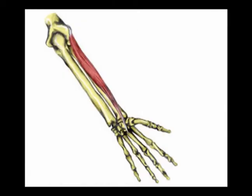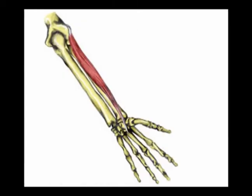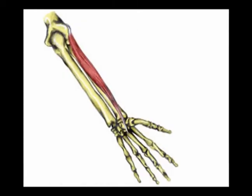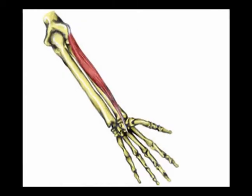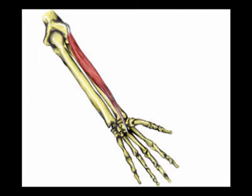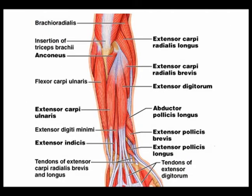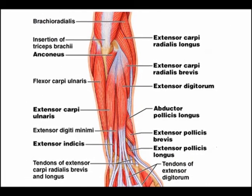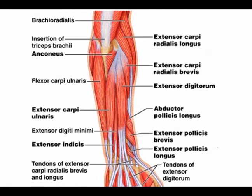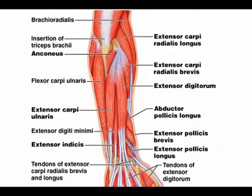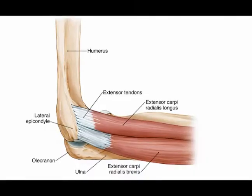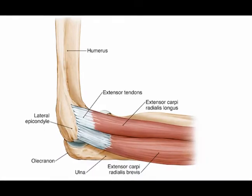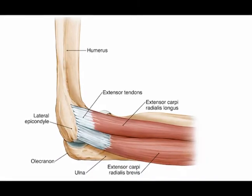Again, the extensor carpi radialis brevis is often abbreviated to the ECRB. It is classified as a posterior forearm muscle in the superficial group. The origin is the lateral epicondyle of the humerus.